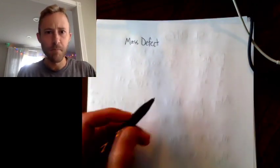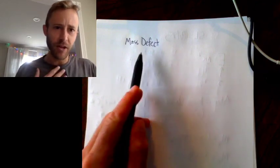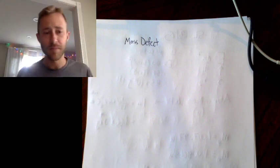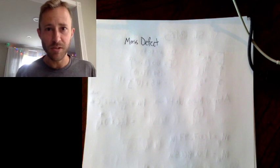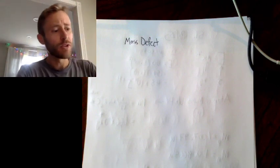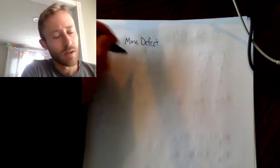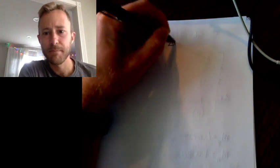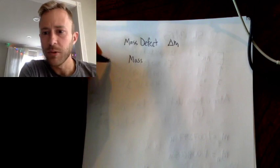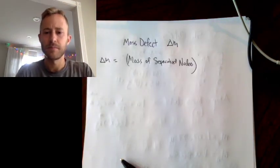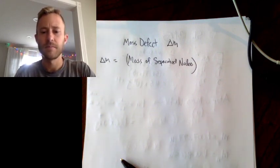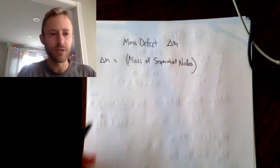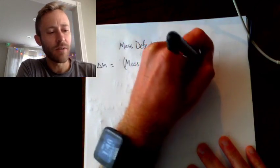There's something called mass defect — not mass effect, though mass effect is my favorite video game, feel free to comment if you've played it. Mass defect is denoted by delta m, and it equals the mass of the separated nucleus minus the mass of the formed nucleus.